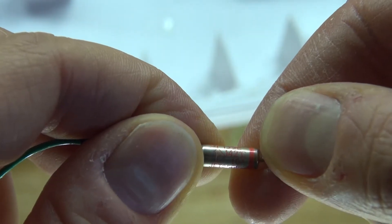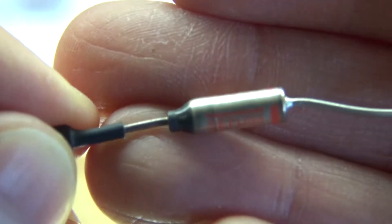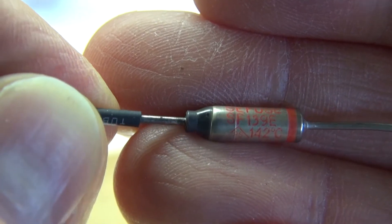And as you can see this fuse could be potentially useful for future projects. Since this is a 250 volt AC fuse, uses 10 amps, and it can handle a temperature of 142 degrees Celsius.